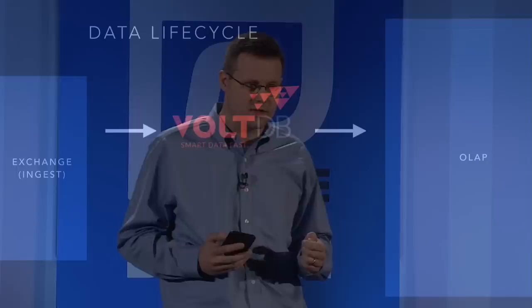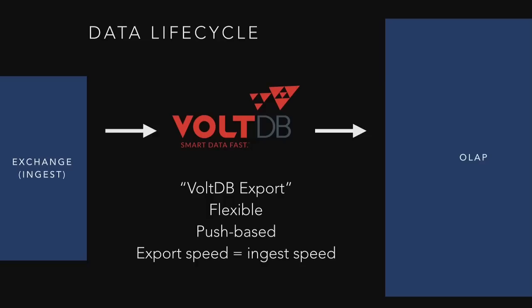Another thing we added was data lifecycle features to VoltDB, called Export. We looked at ETL tools at the time — a lot of them queried every 10 seconds or every 10 minutes asking what's changed since last time. If you're changing things at a million operations a second, asking what's changed in the last 10 seconds is a pretty brutal question. So we built a push-based export designed to push data through VoltDB into an analytics store and make VoltDB part of a data lifecycle system.